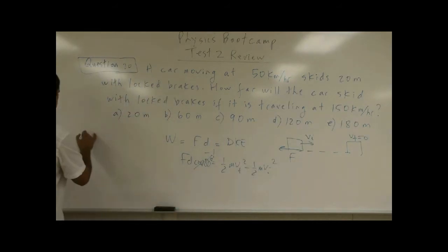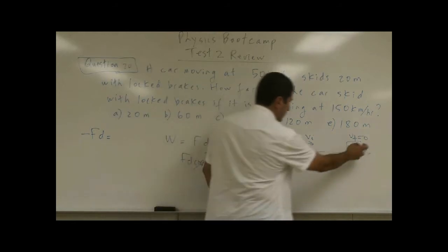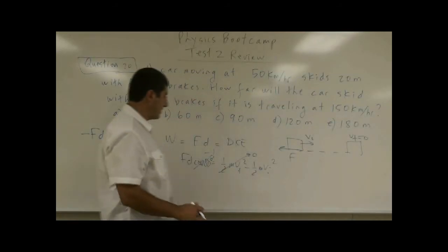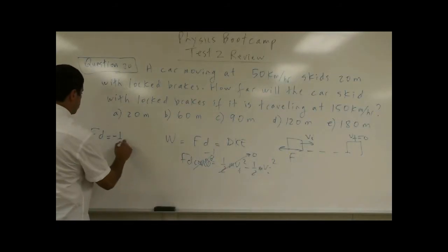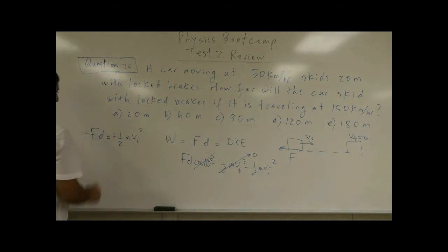So we have negative FD is equal to what? The final velocity of the car is zero since it stops here, right? So then you have negative half MV initial squared. And the negative and the negative cancel, okay?